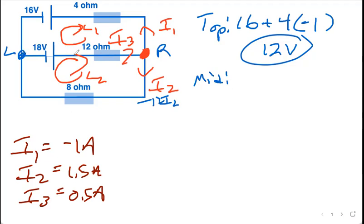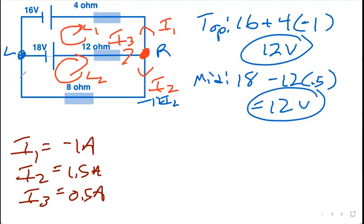Now let's do the middle. You know this problem is so mid. Okay, from left to right, sorry, I'm going to gain 18, I'm going to lose 12 i3. So I'm going to gain 18, I'm going to lose 12, i3 is 0.5, 18 minus 6 is 12 volts.